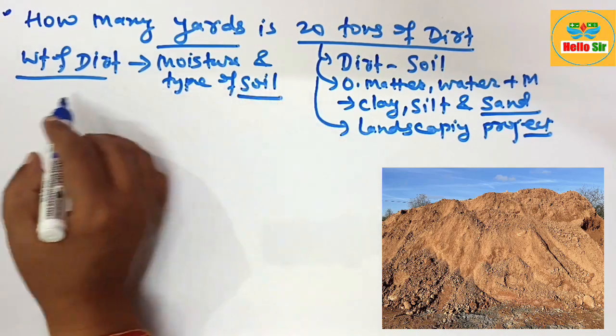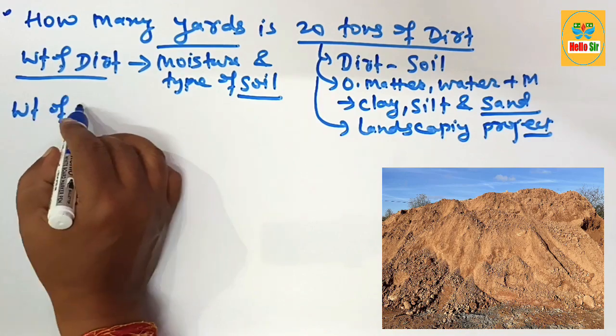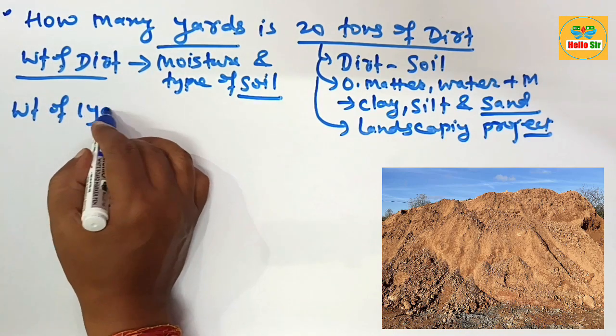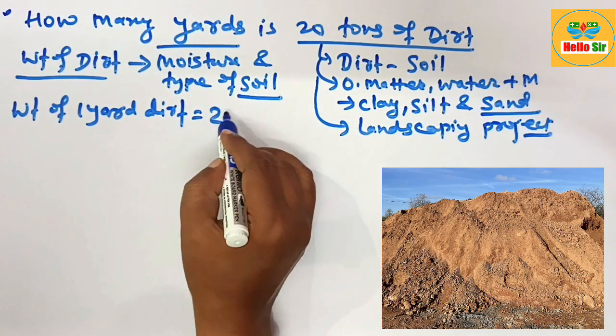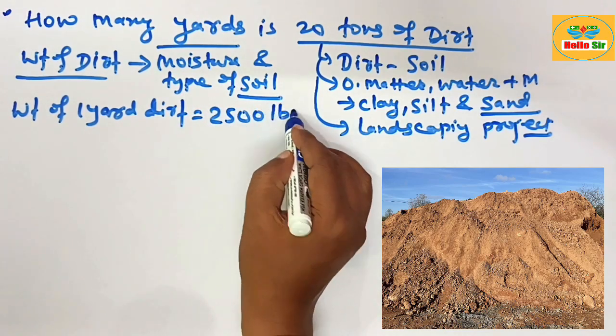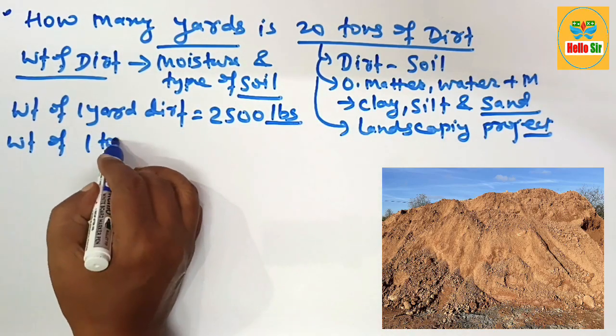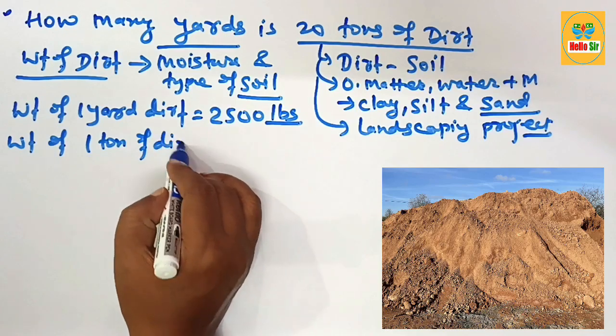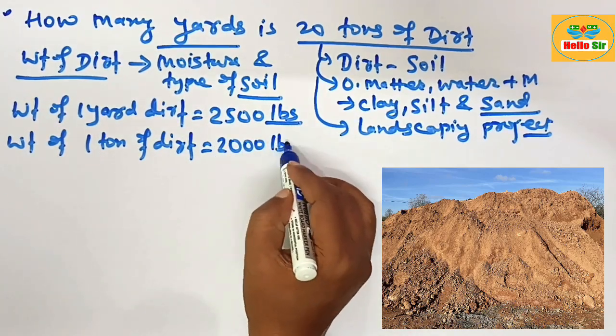But for standard practice, the weight of one yard of dirt is about 2500 pounds, and the weight of one ton of dirt is about 2000 pounds.